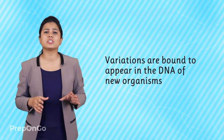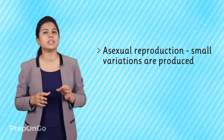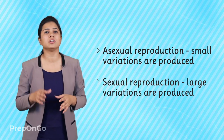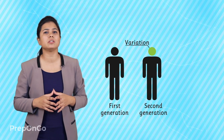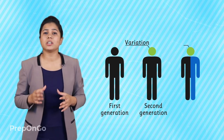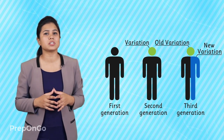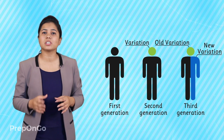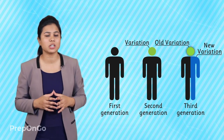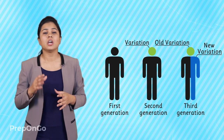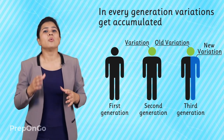So we can say that genes are the reason why we look so much like our parents. Despite being so much alike, any offspring does not look exactly similar to its parents. We have already studied that during any type of reproduction, variations are bound to appear in the DNA of the new organism. During asexual reproduction, small variations are produced, and during sexual reproduction, large variations are produced. When a new generation is produced from the previous one, variations are produced. This second generation will again reproduce and produce certain variations in the third generation, which will have variations inherited from the second generation as well as some new variations. So we can say that in every generation, variations get accumulated.